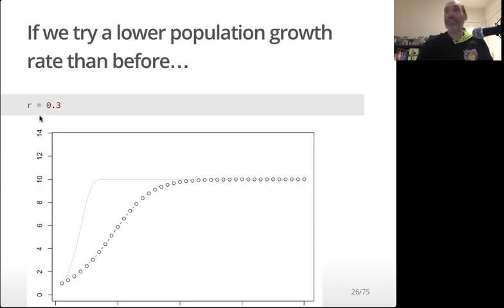And this little r parameter could go all the way down to 0. And remember, if it's negative, then the population is going to decline to 0. And in fact, with the logistic model, it still declines to 0 if it's a negative growth rate.